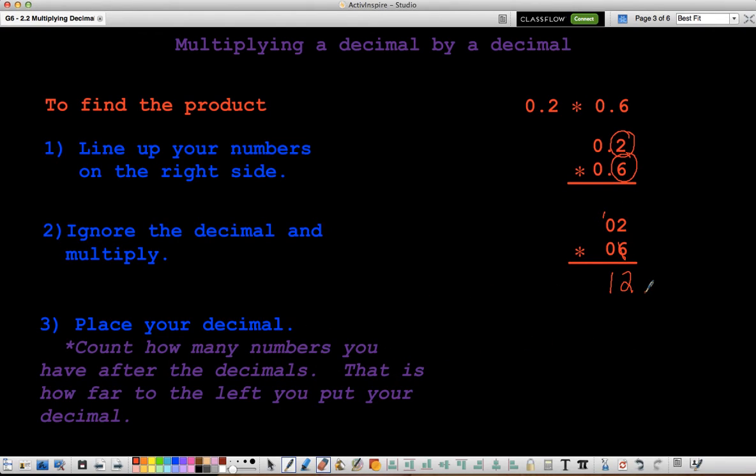So I move the decimal 1, 2 places to the left. So it ends up right here. So I don't just write this because it's a number. I have to make sure to put that 0 in front. So it is 0 and 12 hundredths as my answer.